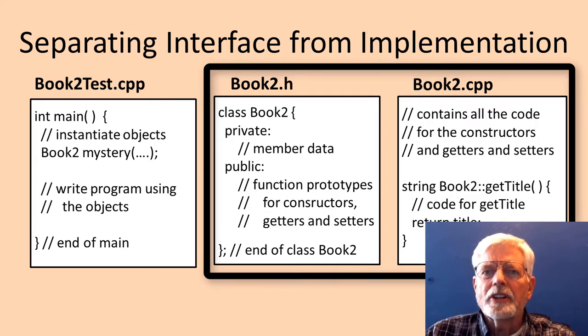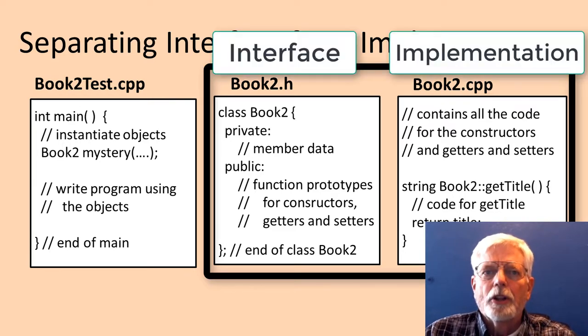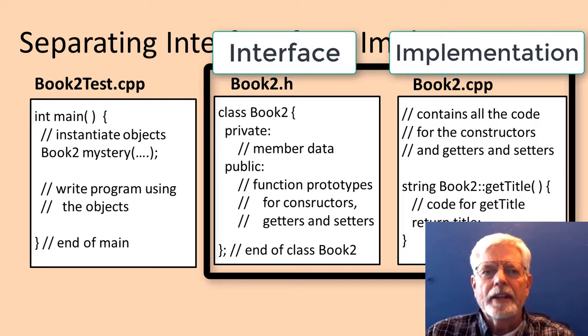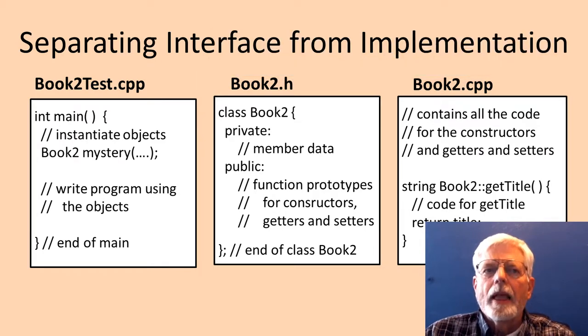When these parts of the class definition are separated into two separate files, the Book2.h file with the class definition is called the interface, and the Book2.cpp file that has the executable code is called the implementation. These are the two OOP terms that are nice to remember.